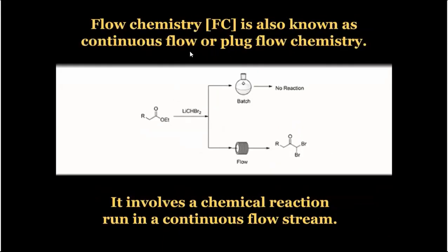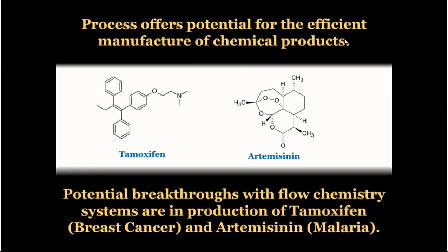Flow chemistry is also known as continuous flow or plug flow chemistry. It involves a chemical reaction run in continuous flow. As per the reaction, batch-wise there is no reaction, but in flow there is a reaction in continuous flow. For example, lithium methyl bromide reacting with a CO-ethyl ester to produce a ketone, substituted ketones. The process offers potential for efficient manufacture of chemical products.